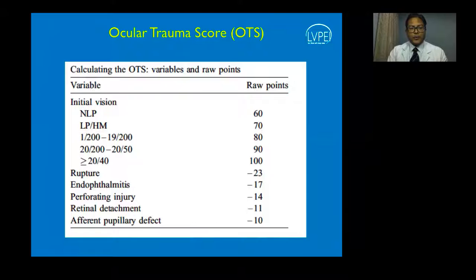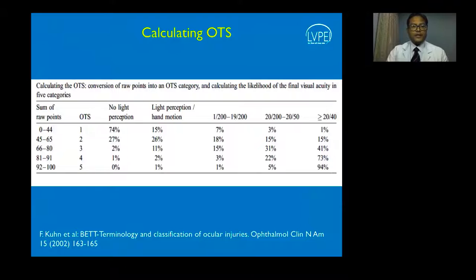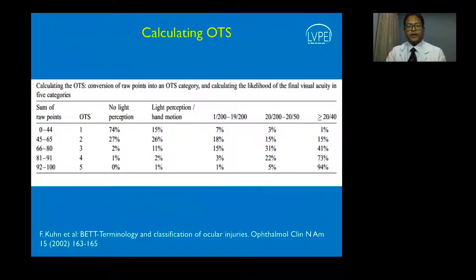If a patient has better than 20/40 vision on presentation, they would have an OTS of 100. If there is a rupture of the eyeball, you deduct 23, leaving a balance of 77. This would place the patient in OTS category 3. The OTS has five categories based on sum points, giving you an idea of what percentage chance the patient has of regaining vision. A score of 77 yields a 41% chance of ending up with 20/40 vision.